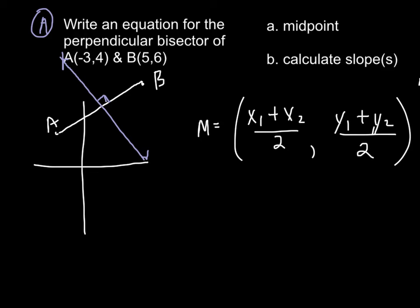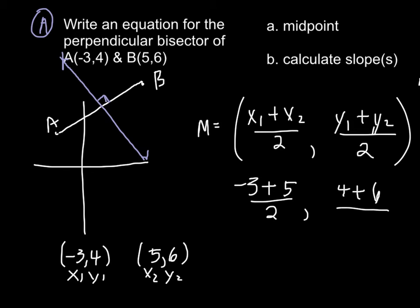And now we need to label our points A and B for their x and y equivalents. So we have (-3, 4), this will be x₁, y₁, and then (5, 6) for x₂, y₂. So we have negative 3 plus 5 over 2, 4 plus 6 over 2.